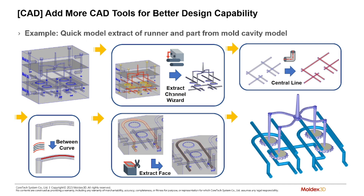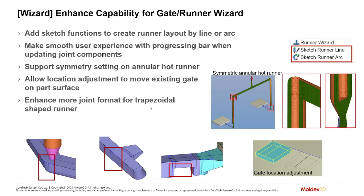Here's an example of the extraction of a runner system and a cooling system. The extract channel wizard allows you to extract the geometry of your runner and cooling systems. You can create centerlines using the centerline tool, use 'between curves' to create a line-defined runner system, or keep it as solid geometry. You can use extract face for complex cooling channel geometry. We've also enhanced the gate and runner wizard — it now creates a more reasonable runner system and includes new junction pieces for more diverse modeling.